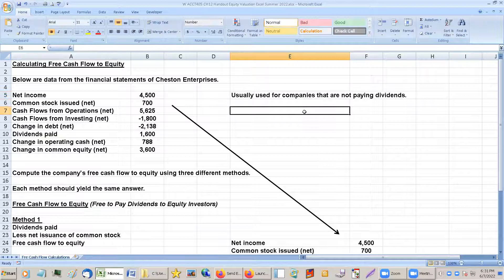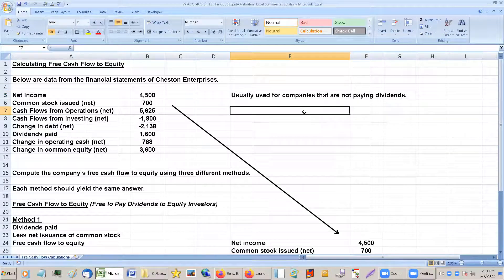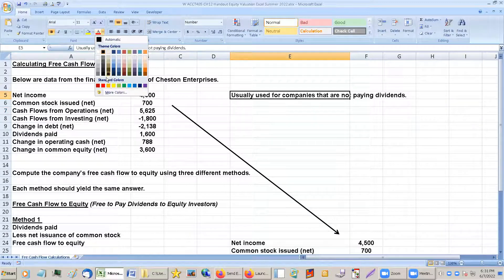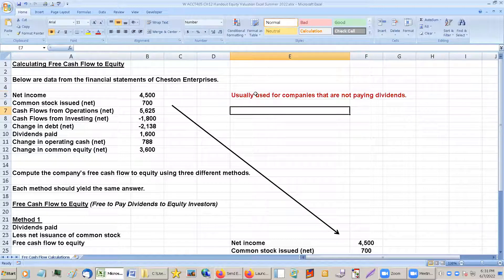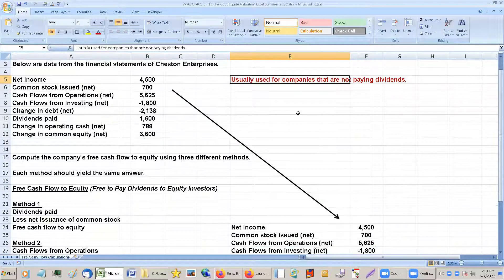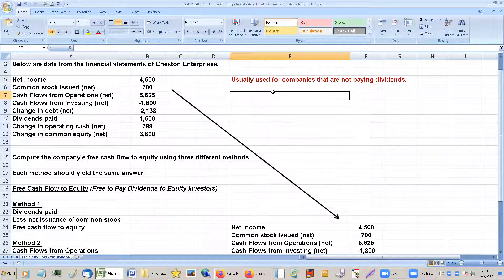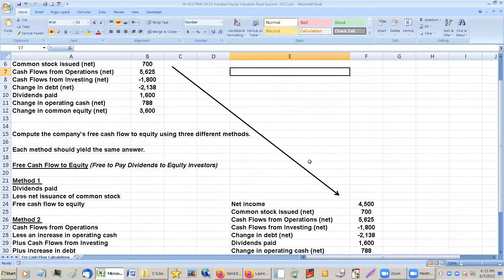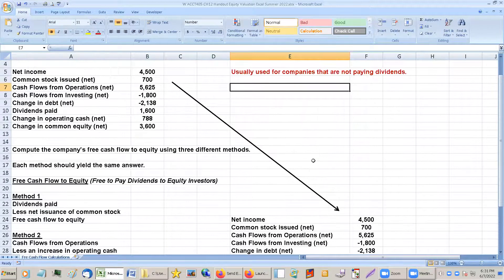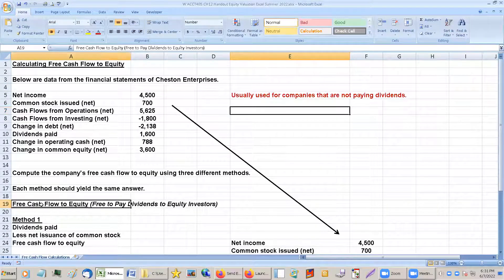So companies that aren't paying dividends, there is a discounted dividend model, but if you're not paying dividends, there's nothing to discount. So a lot of times this is used for companies that are not paying dividends because they're reinvesting the money back into the company. And the question is, well, if they're not paying dividends, how do you value the company? Because you can't discount the dividends back. Okay, so we're going to go through this. This is free cash flow to equity.